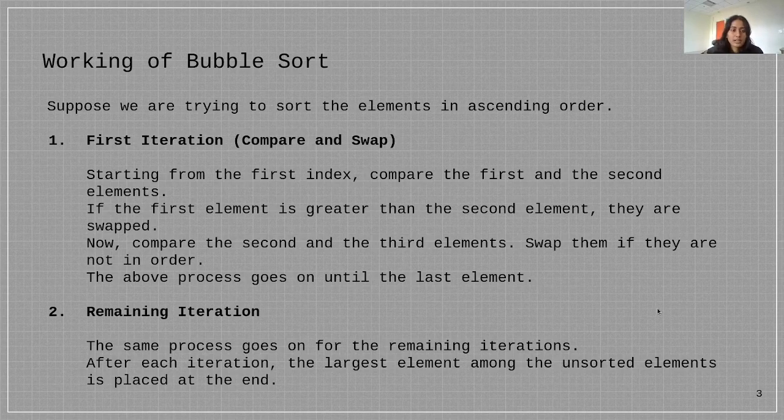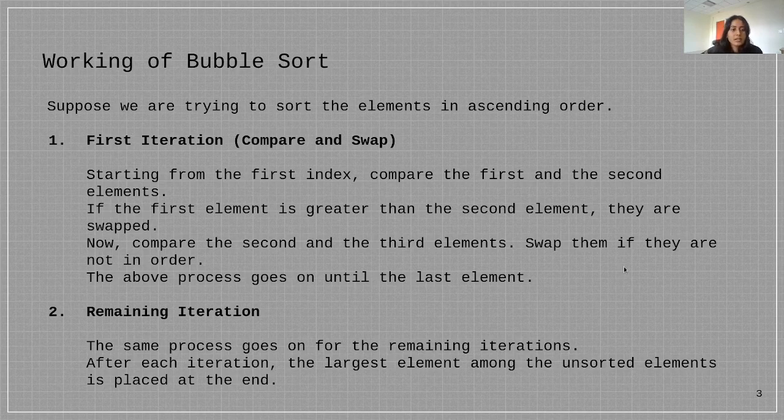The working of bubble sort algorithm can be explained by the following method. Suppose we are trying to sort elements in ascending order, which we'll be doing in this video. The first iteration is compare and swap. We start from the first index and compare the first and the second element. If the first element is greater than the second element, they are swapped.